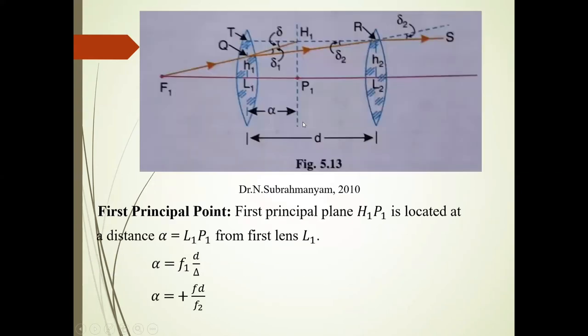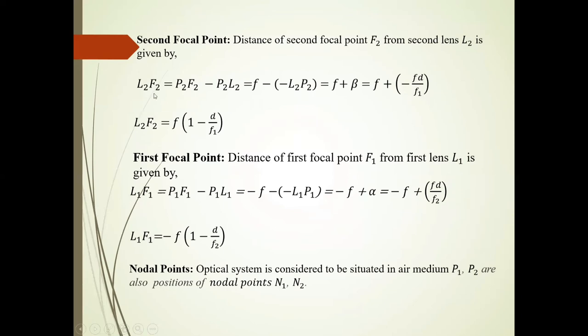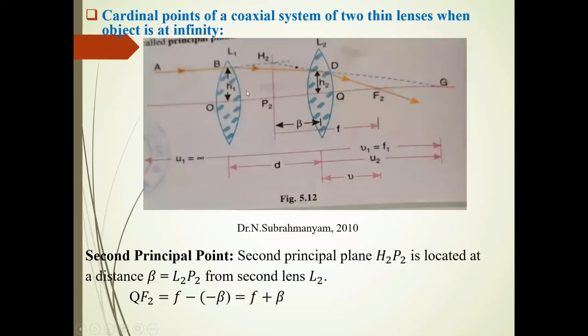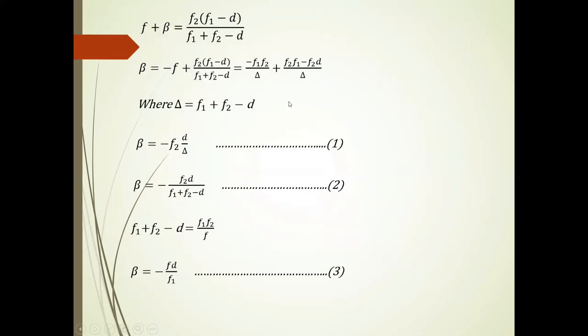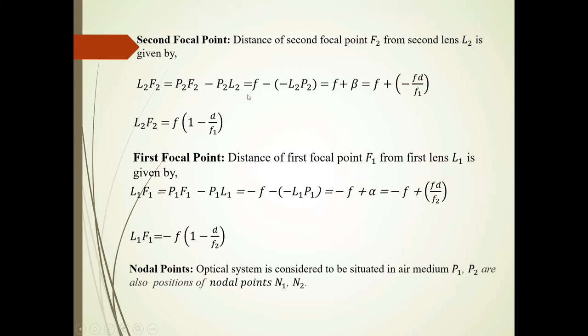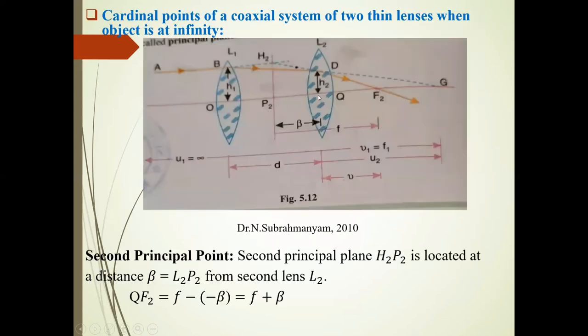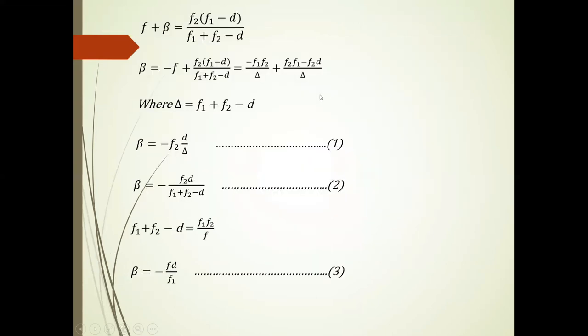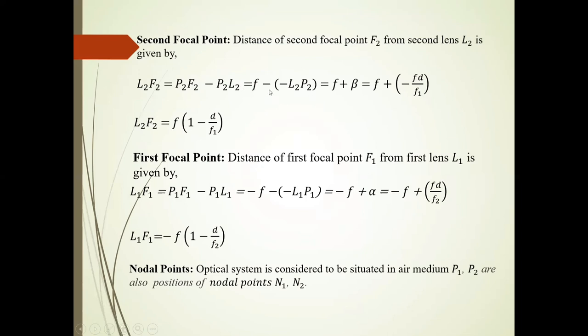see here we can write now. So L2 F2, this distance is equal to P2 F2 minus P2 L2. So we can write L2 F2 is equal to F plus this beta, F plus value of beta minus F D upon F1. So L2 F2 is simplifying this F into 1 minus D upon F1.